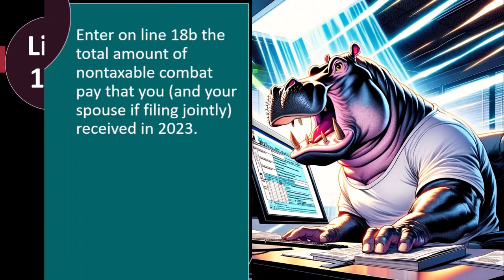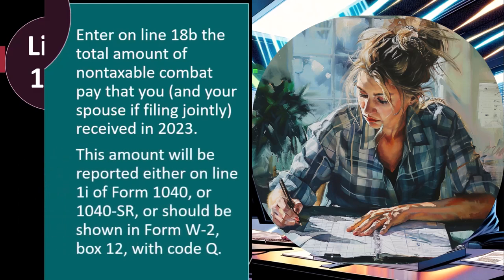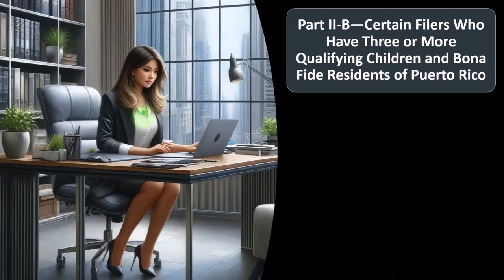Line 18B: enter the total amount of non-taxable combat pay that you and your spouse, if filing jointly, received in 2023. Combat pay can be tricky — sometimes you get benefits regarding whether you want to include it in income or not, which can be confusing because sometimes you might want to include something in income even if it raises it, particularly with refundable credits like the earned income credit. This amount will be reported on line 1I of Form 1040 or 1040-SR, or shown on Form W-2 box 12 with code Q.